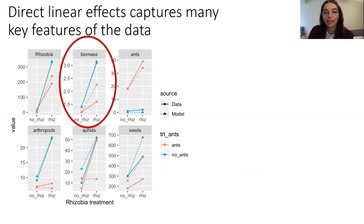If we look here, we can see the x-axis compares the rhizobia treatments and the y-axis is the number of nodes, individuals, or grams depending on the response variable.